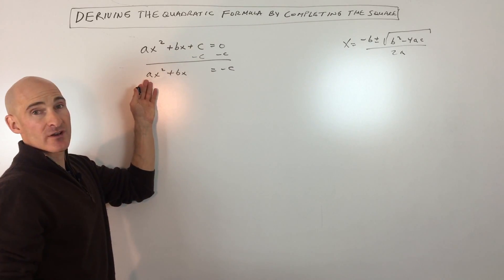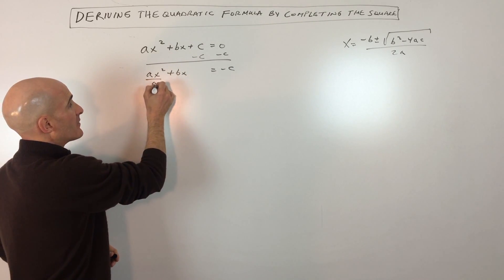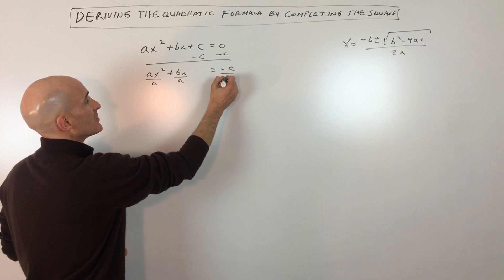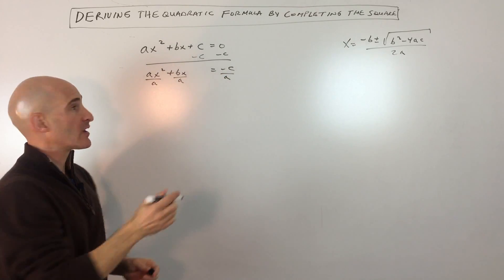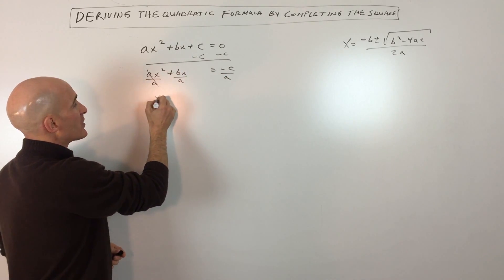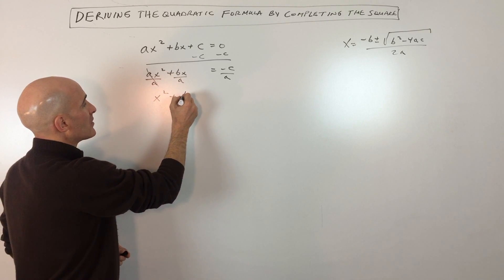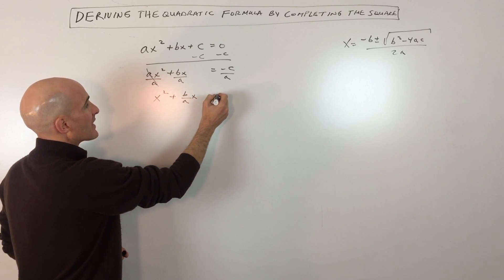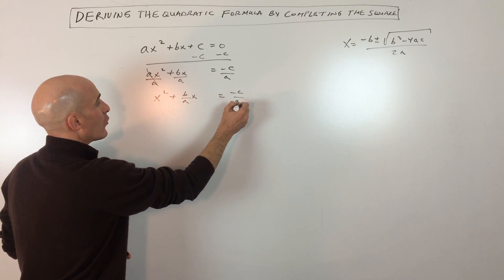Now because we have a leading coefficient of a, what I'm going to do is divide the left and the right sides of the equation by a to keep it balanced. So if we do that, these are going to cancel one another out. We're left with x squared plus b over a times x equals negative c over a.